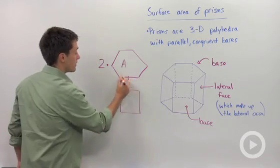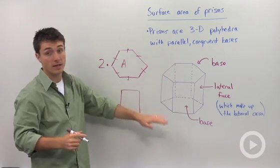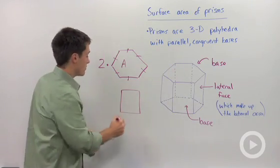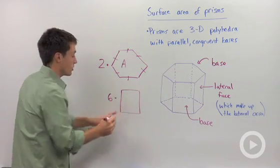Now, if you have a regular hexagon as your base, then you can assume that you're going to have six congruent rectangles.